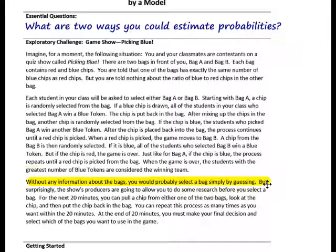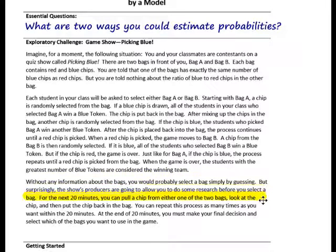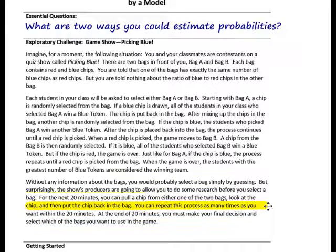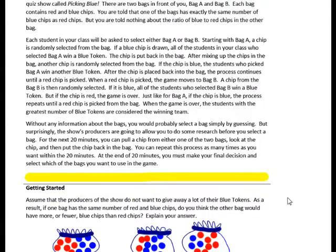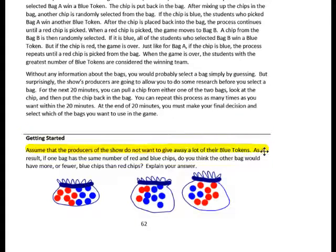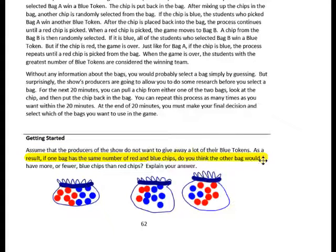Without any information about the bags, you would probably select a bag simply by guessing. But the show's producers are going to allow you to do some research before you select a bag. For the next 20 minutes, you can pull a chip from either one of the two bags, look at the chip, and then put the chip back in the bag. You can repeat this process as many times as you want. Assume the producers do not want to give away a lot of their blue tokens. If one bag has the same number of red and blue chips, do you think the other bag would have more or fewer blue chips than red chips? Explain your answer.